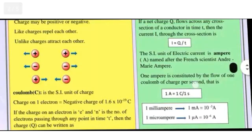The SI unit of electric current is ampere, represented as A. This was given by French scientist Andre Marie Ampere. One ampere is constituted by the flow of one coulomb of charge per second, that is, 1 A = 1 C/1 s. One milliampere equals 1 mA equals 10 to the power minus 3 ampere, or one microampere equals 1 μA equals 10 to the power minus 6 ampere.